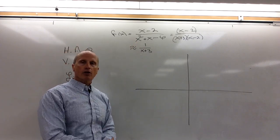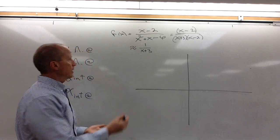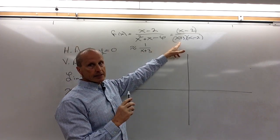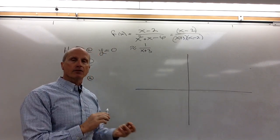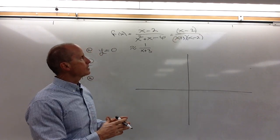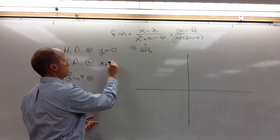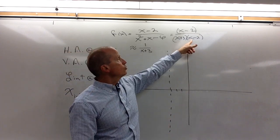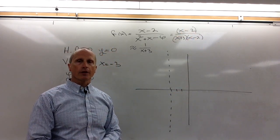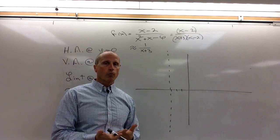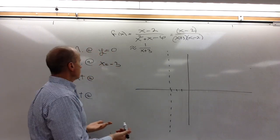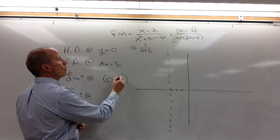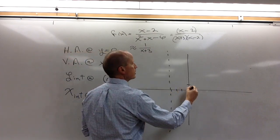We need to keep in mind what the original domain was, but we're essentially graphing the simplified function. The degree of the denominator is larger than the numerator, so we always have a horizontal asymptote and it's always the x-axis. For vertical asymptotes — with one exception — we always get a vertical asymptote at any value that makes the denominator zero. So we'd expect a vertical asymptote at x = −3, which we do get. And we'd also expect one at x = 2. However, because of the common factors, we don't get a vertical asymptote there.